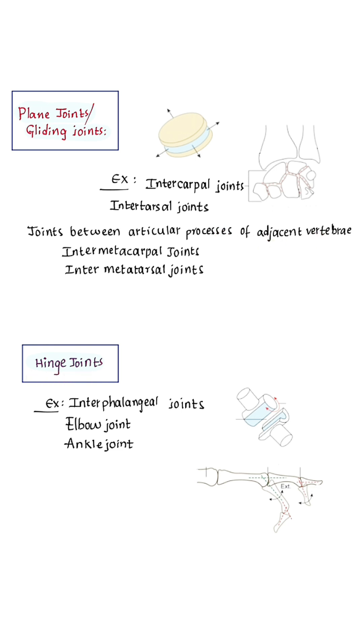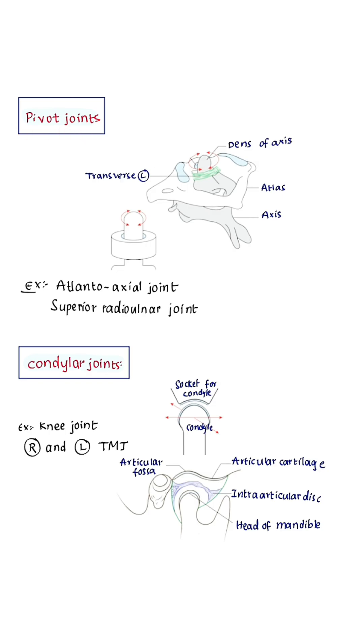Hinge joints: the articular surfaces are pulley-shaped. Examples include interphalangeal joints, elbow joint, and ankle joint.